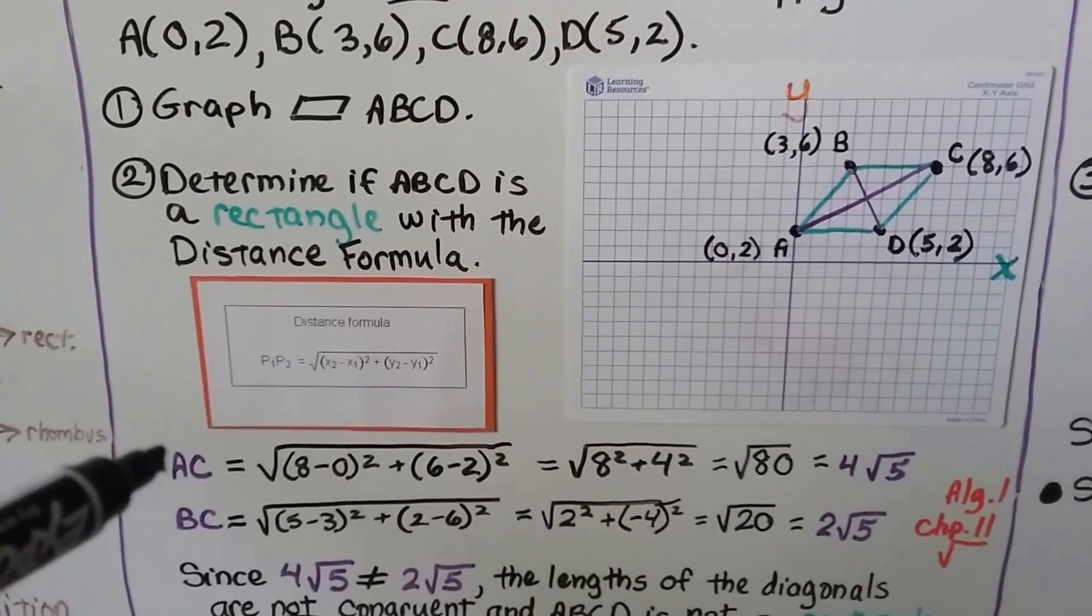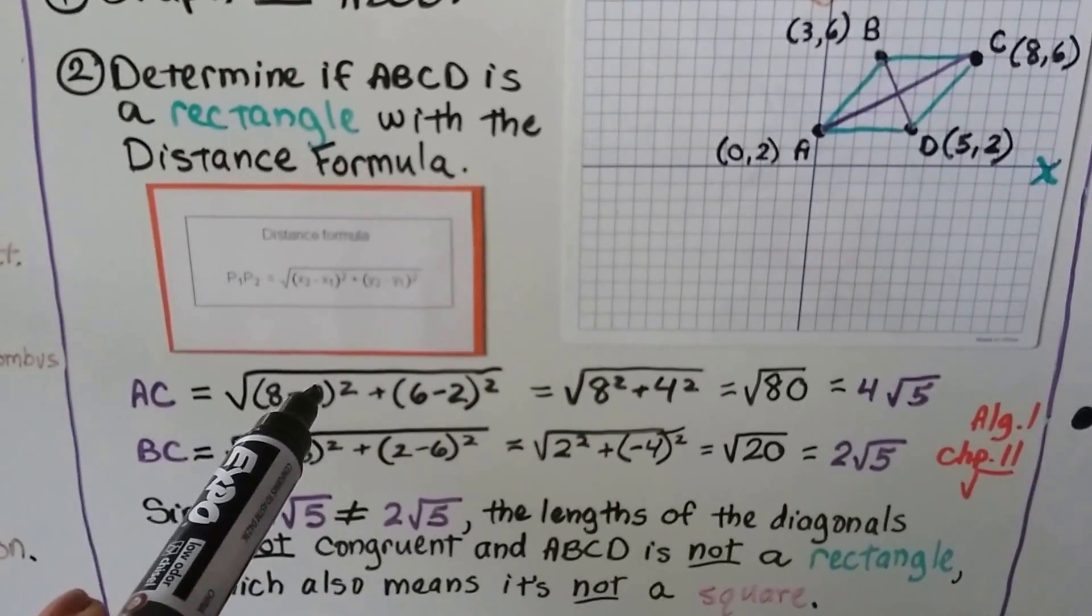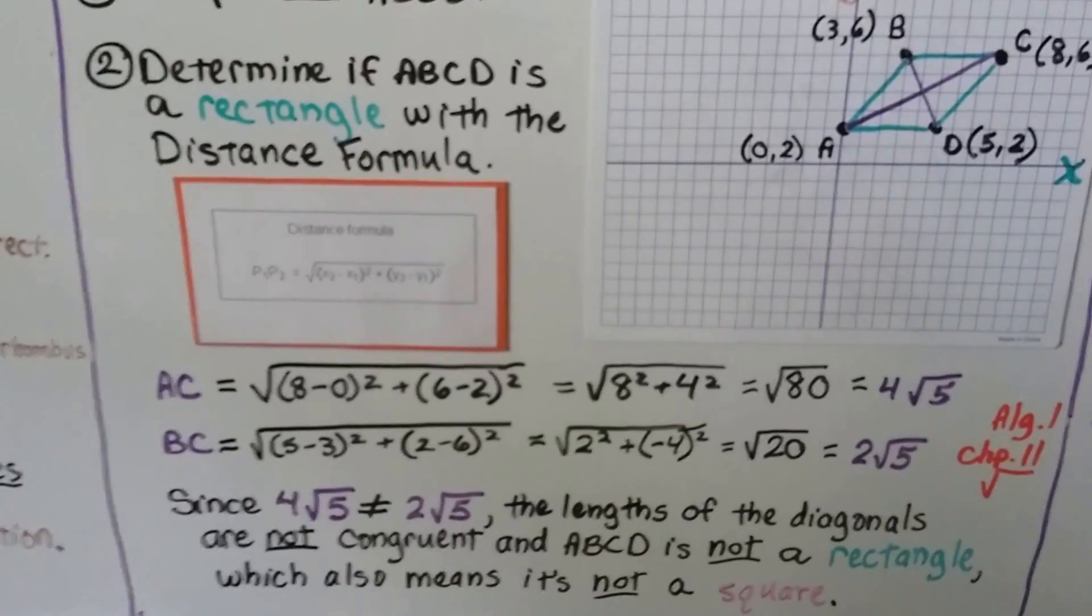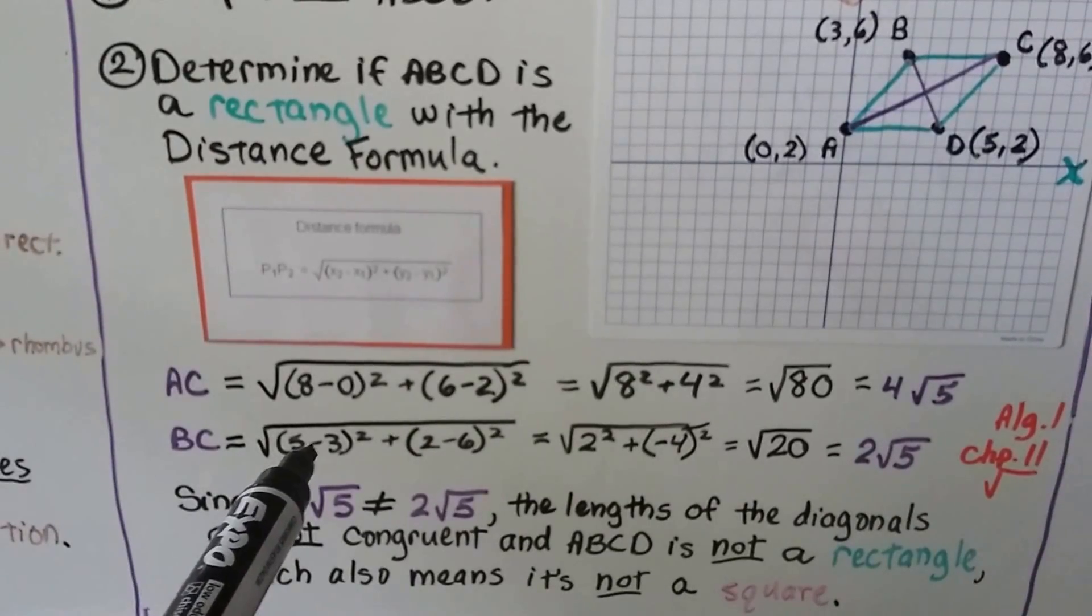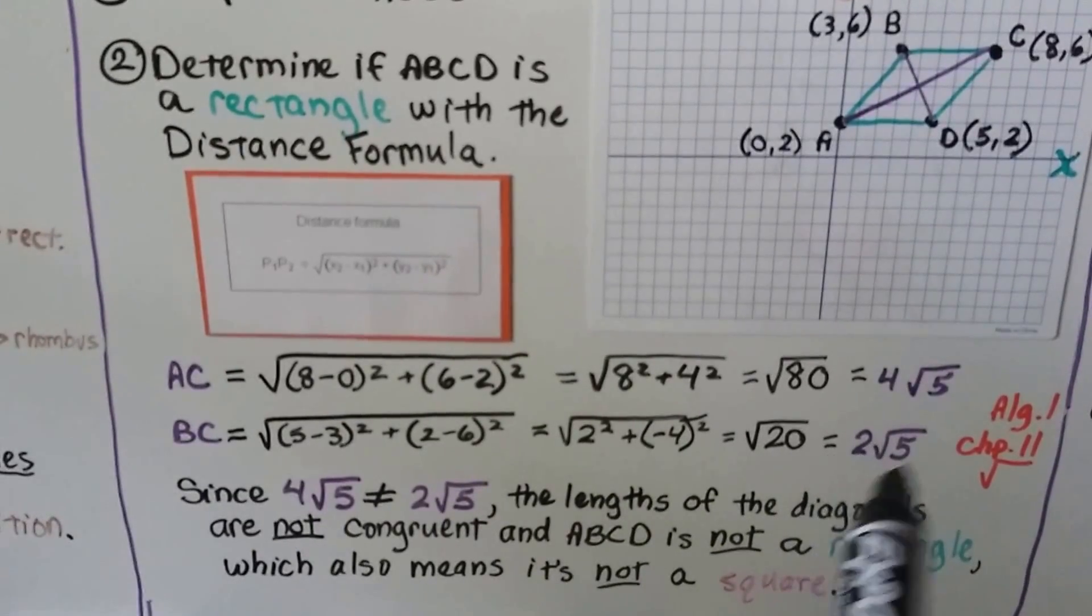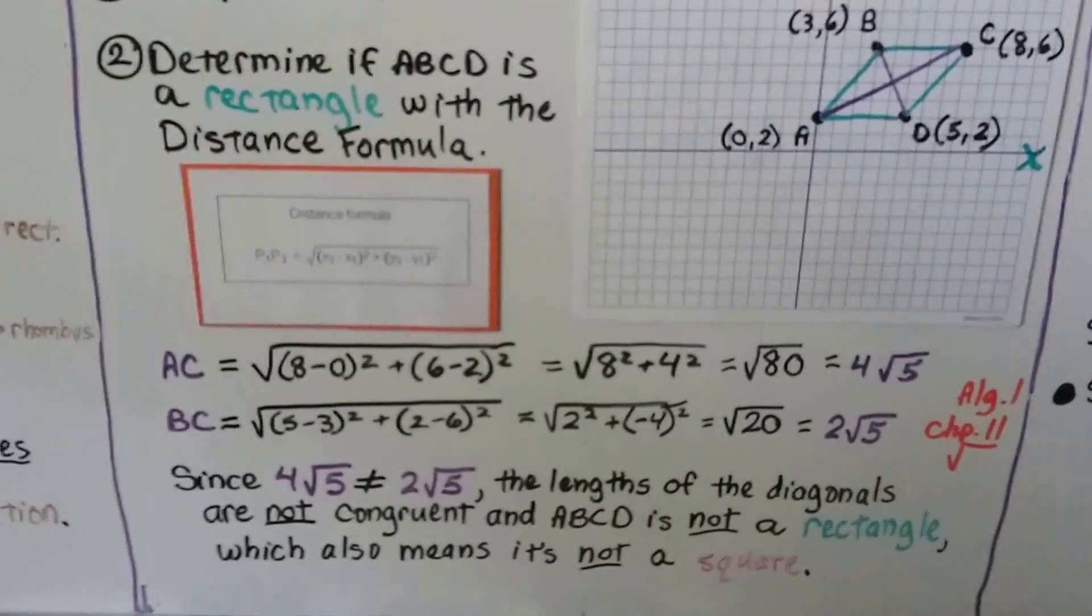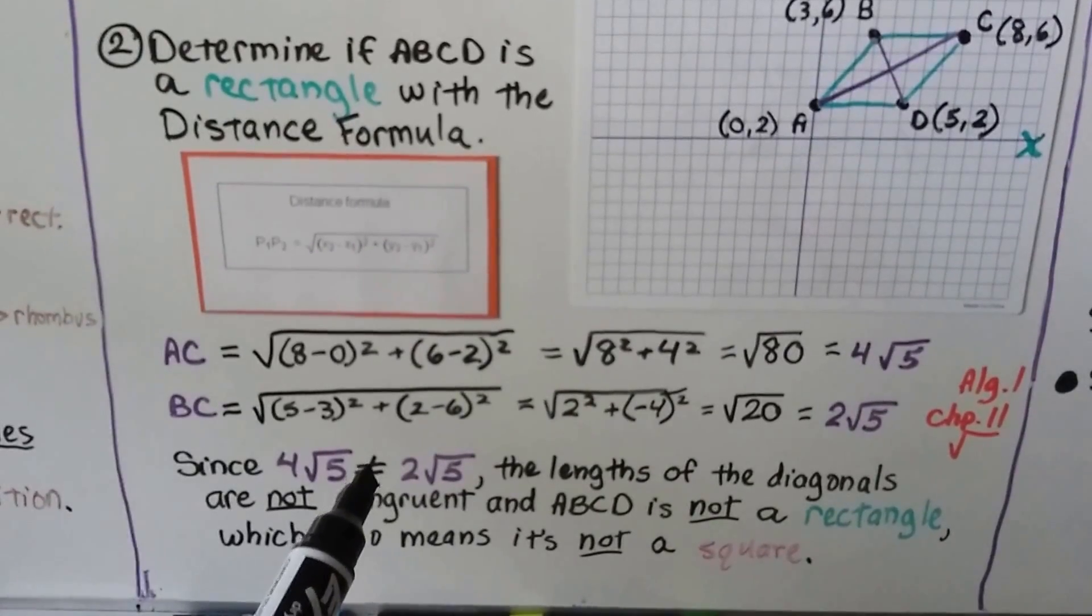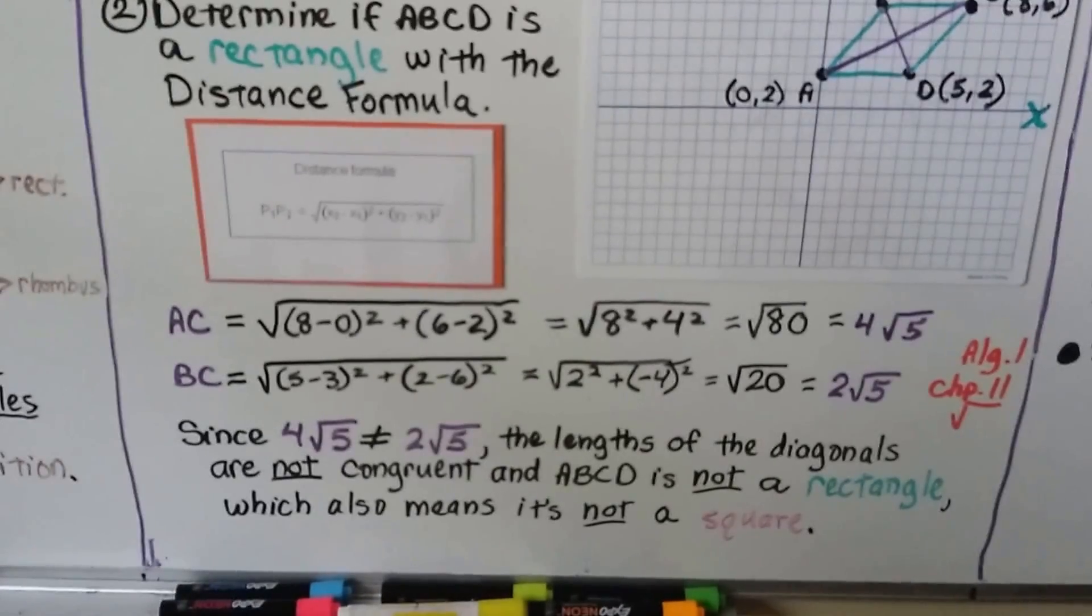And we take the ordered pairs for A and C and put them into the distance formula. We get the square root of 8 minus 0 squared, which is 8 squared, plus 6 minus 2 squared, which is 4 squared. So, that's the square root of 80, which is equal to 4 square root of 5. We do the ordered pairs for B and D and put them in. We get 5 minus 3 squared, which is 2 squared, plus 2 minus 6 squared, which is negative 4 squared. That equals the square root of 20, which is equal to 2 square root of 5. If this confuses you, you need to watch Algebra 1 Chapter 11. Since 4 square root of 5 is not equal to 2 square root of 5, the lengths of the diagonals are not congruent. And ABCD is not a rectangle, which also means it's not a square.